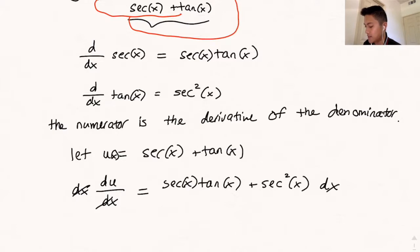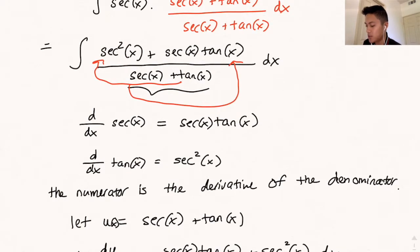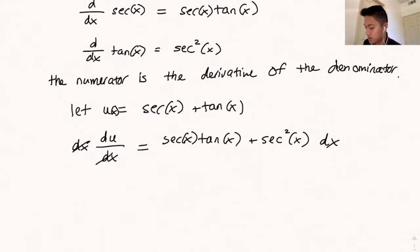So now what we can say is that we can convert this integral into a function that looks like this: the integral of one divided by u times du.